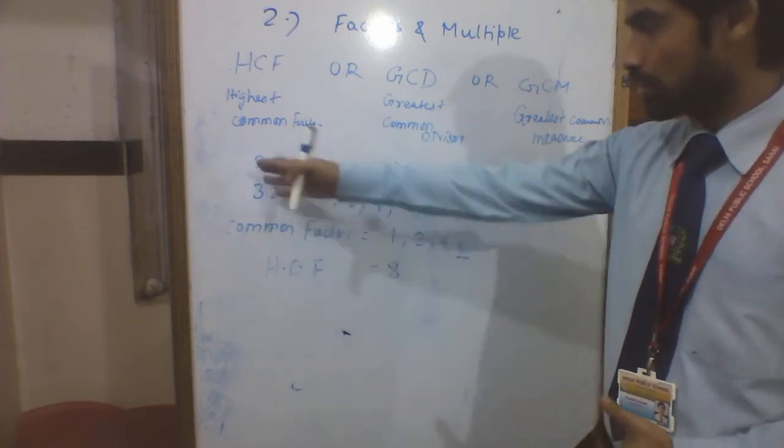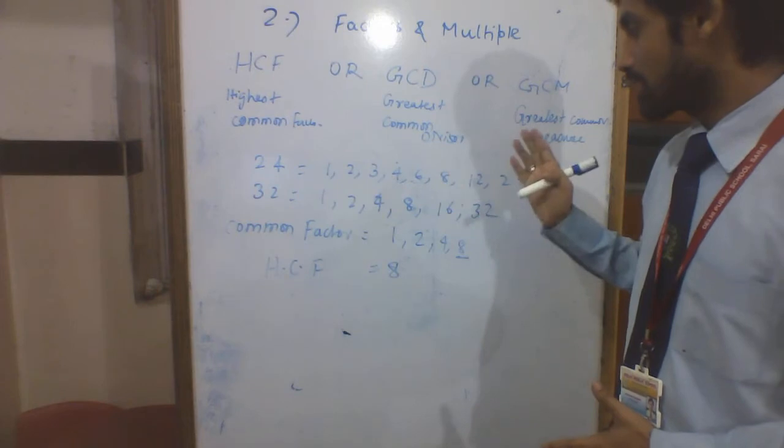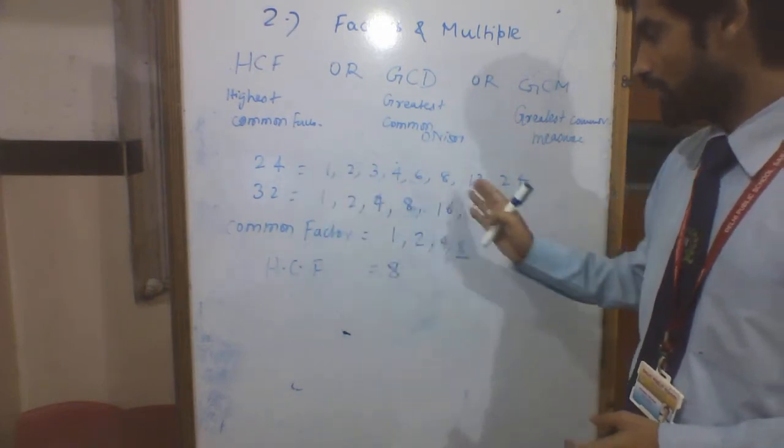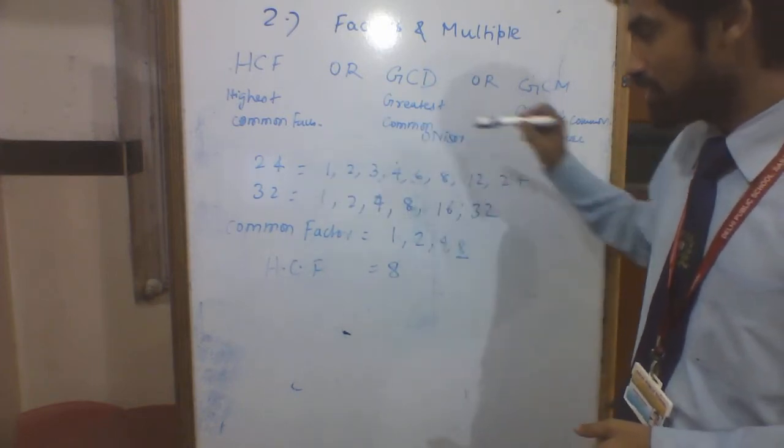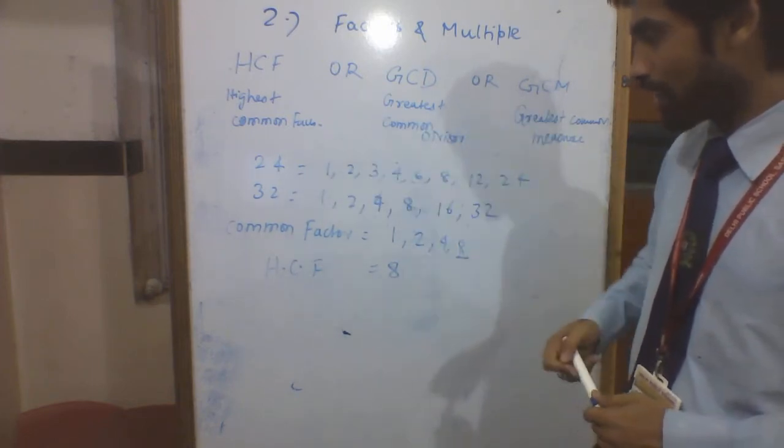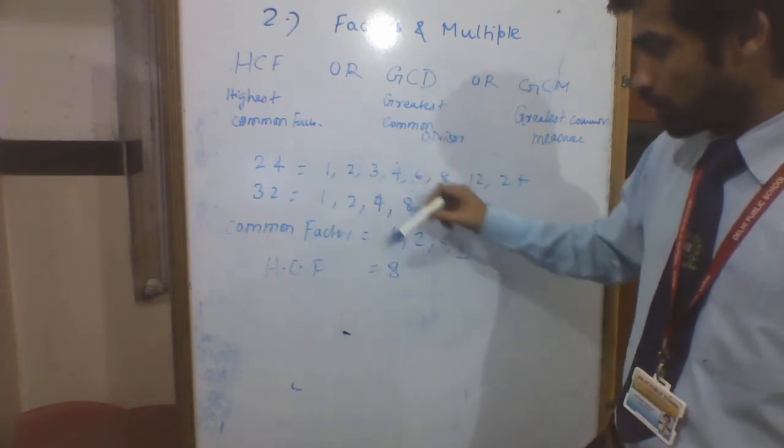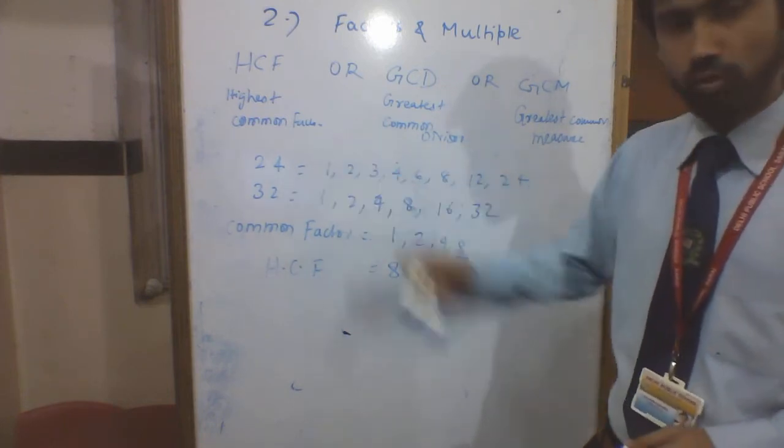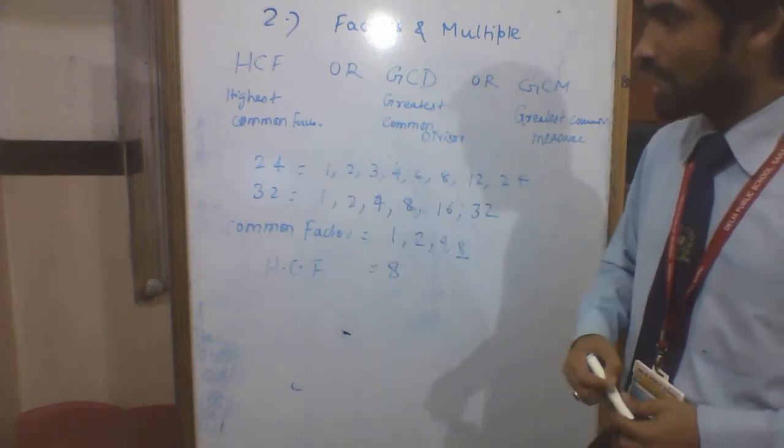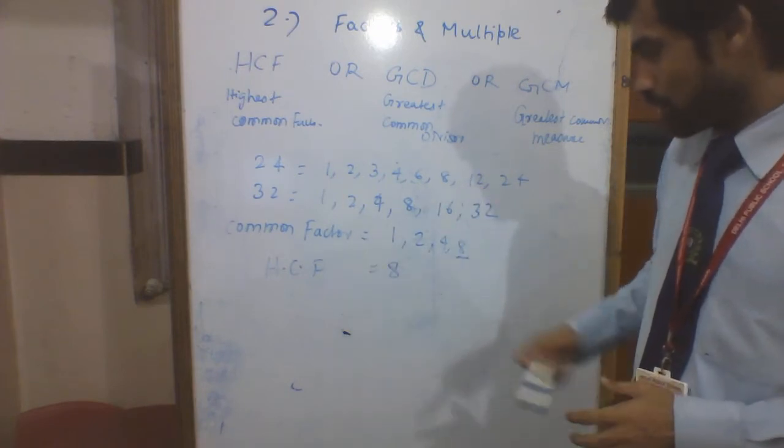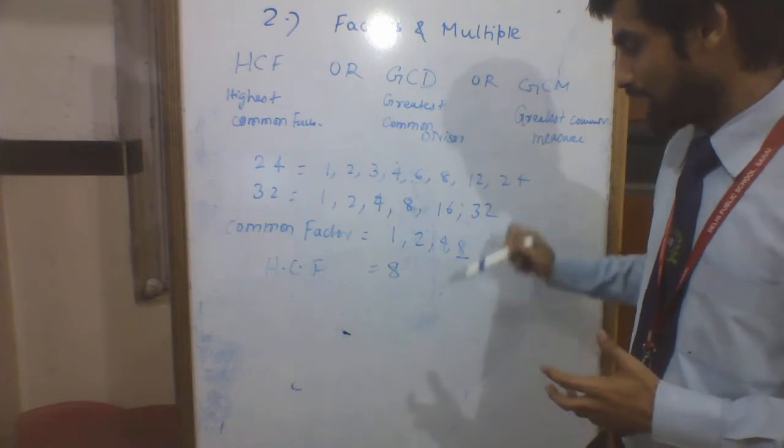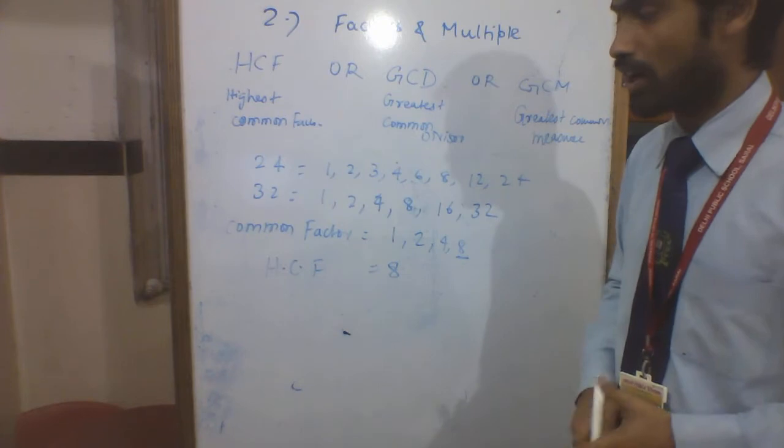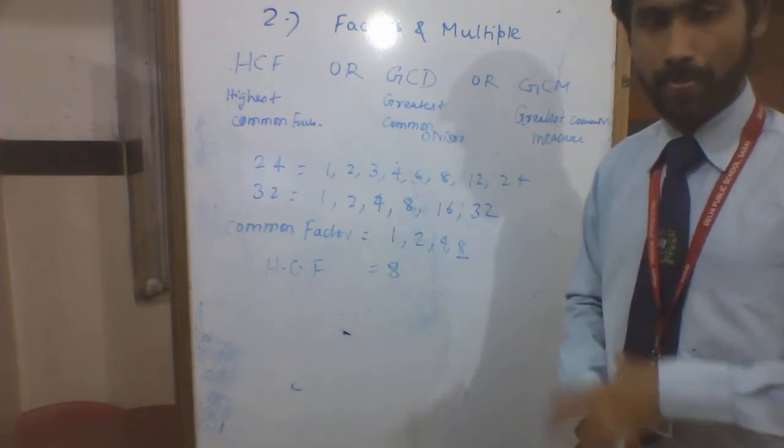What is the highest common factor between 24 and 32? The factors of 24 are 1, 2, 3, 4, 6, 8, 12, and 24. The factors of 32 are 1, 2, 4, 8, 16, and 32. The common factors are 1, 2, 4, and 8. The greatest factor is 8, so 8 is the highest common factor between 24 and 32.